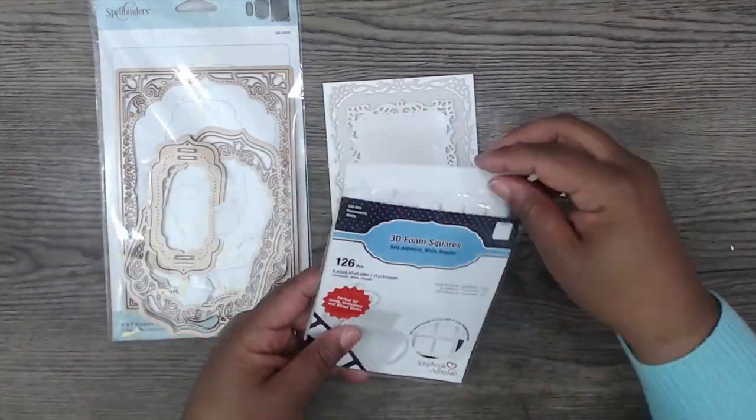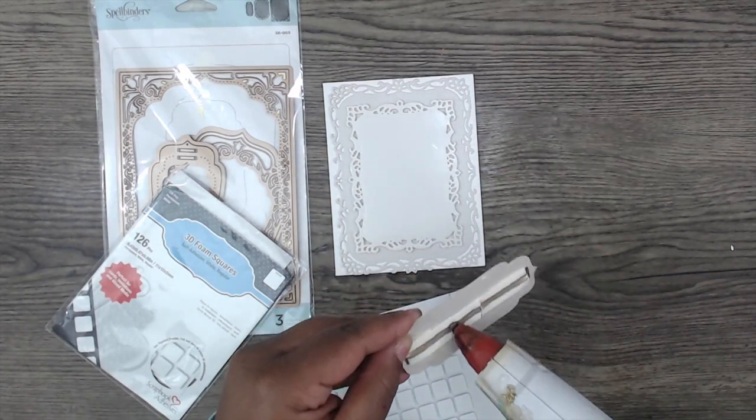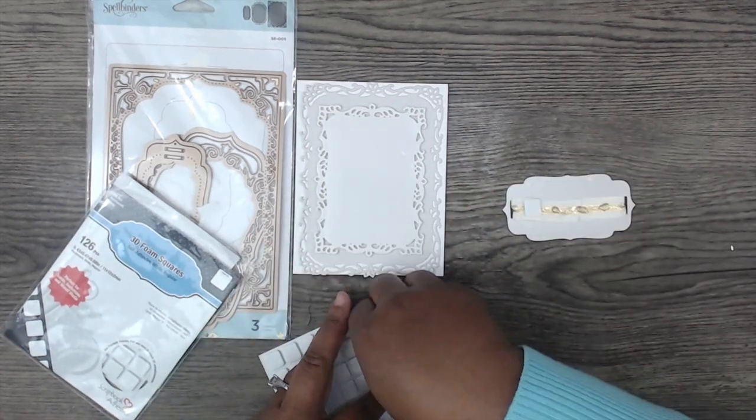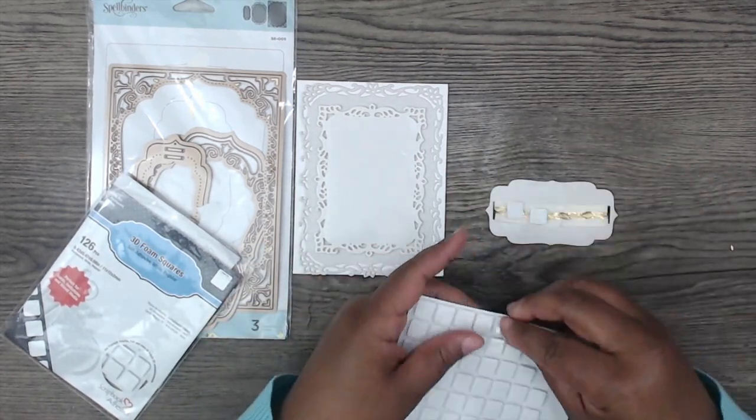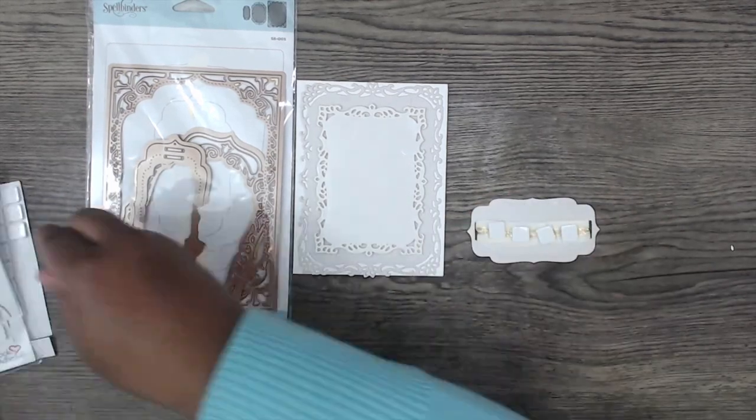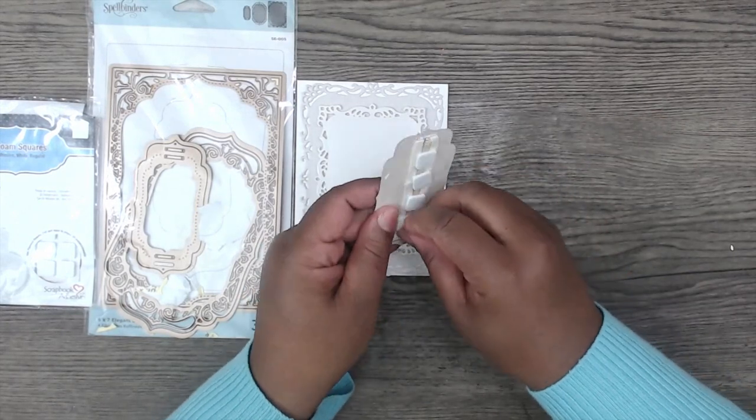Next we're going to add some adhesive to the back of that label using 3D foam squares. But because I have ribbon on the back, I want to make sure it stays secure. So I added a dot of hot glue along the back side before adding the foam dots. It's a little trick to keep everything in place. Once I remove the backing, I'll add more hot glue and add it to the card.